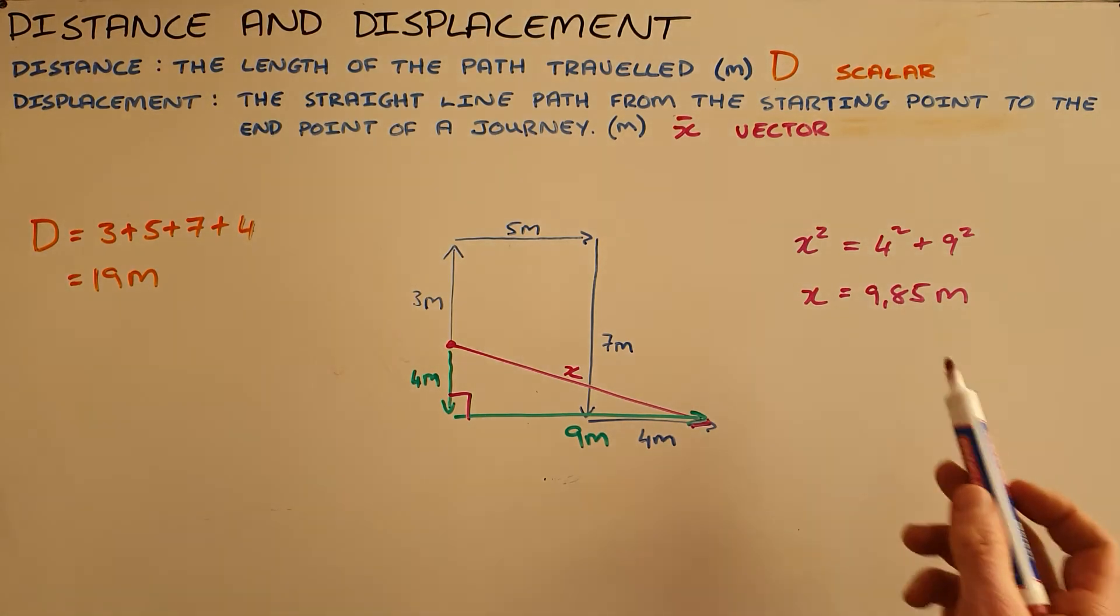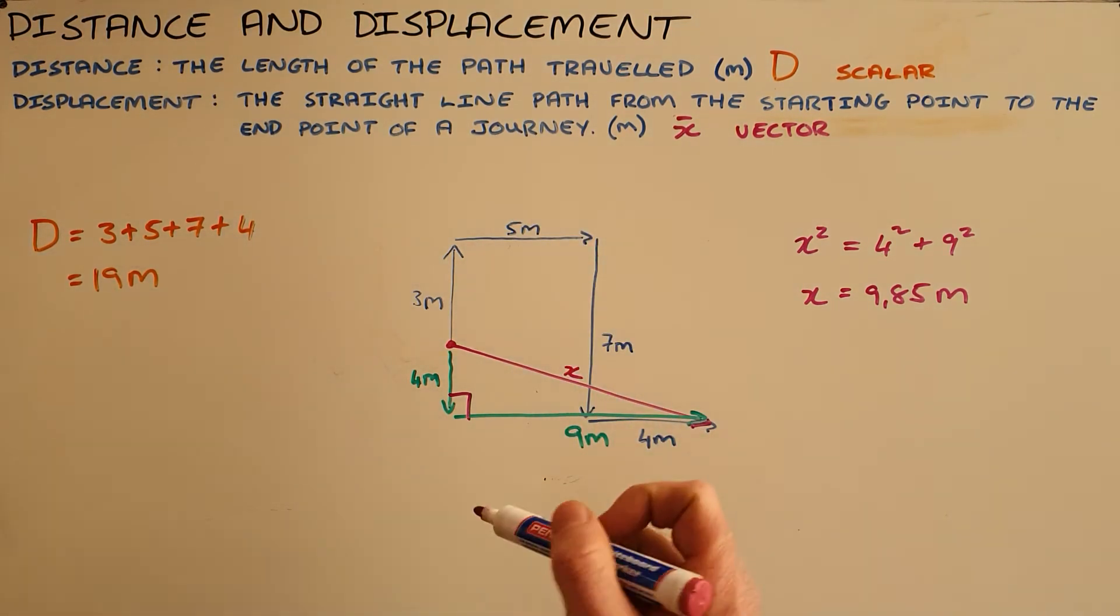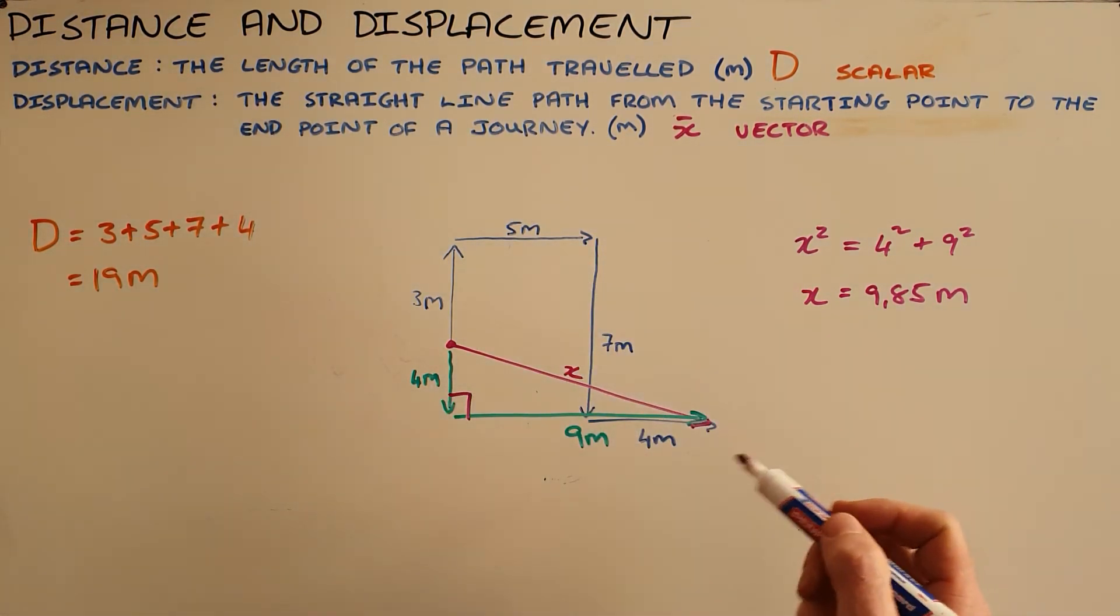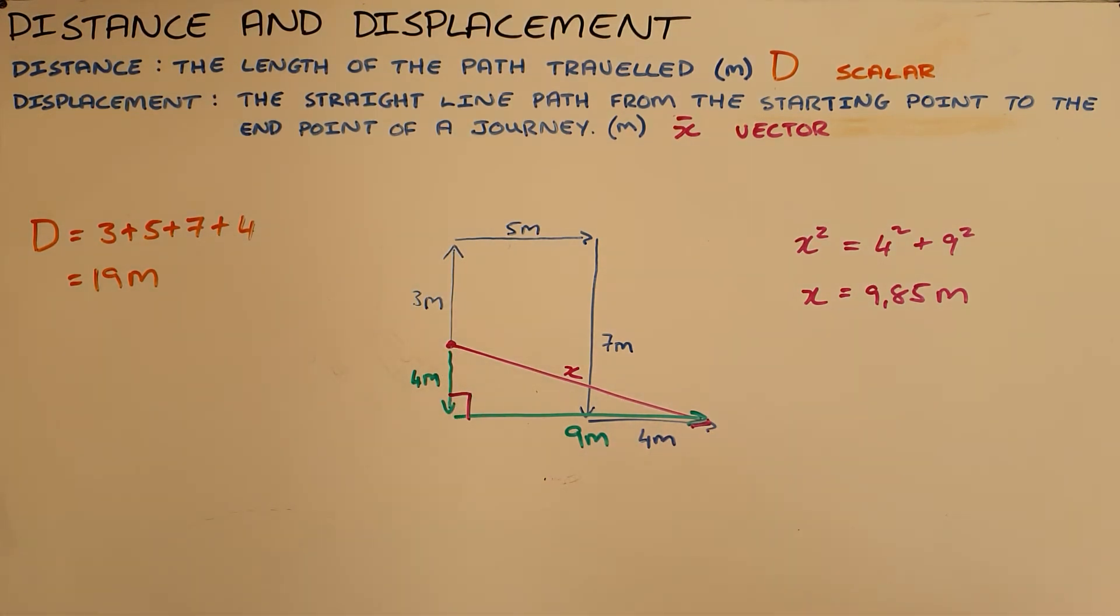We can very clearly see there's a big difference between the distance and displacement of this object. That comes from the definition: distance is the length of the path traveled, and displacement is simply the straight line path from the start point to the end point of a journey.